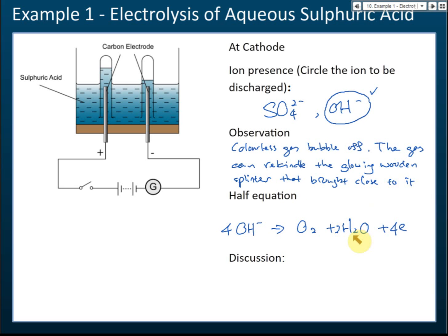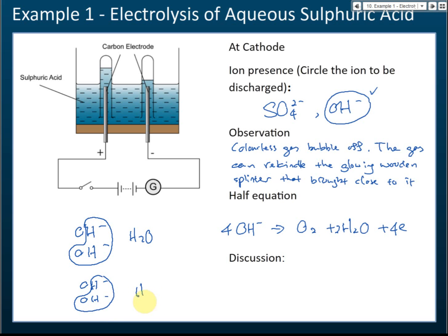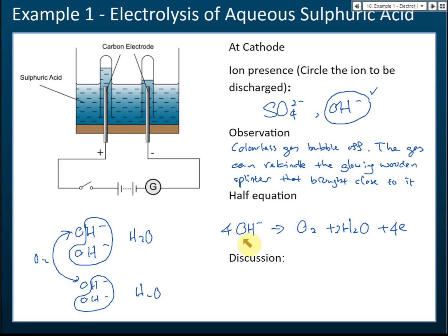The H₂O in the equation comes from the hydroxide ions: one OH⁻ combines with another OH⁻ to form H₂O, and this happens again with two more hydroxide ions. The oxygen atoms from the four hydroxide ions combine to form O₂. That's why four hydroxide ions produce one oxygen molecule and two water molecules.